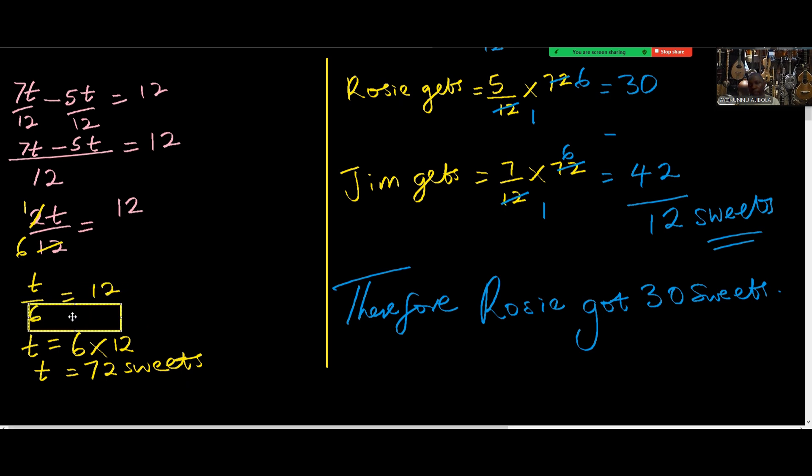When we cross multiply, 6 times 12 is 72. That's 72 sweets. So that means if we remove the extras, which are 12 sweets, we have 60. 60 divided equally would be 30, 30.